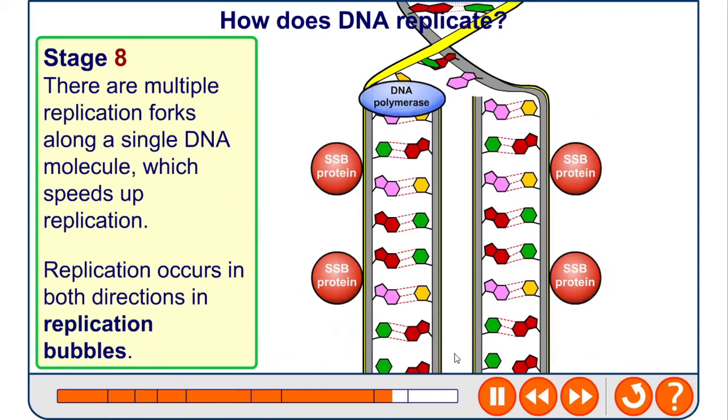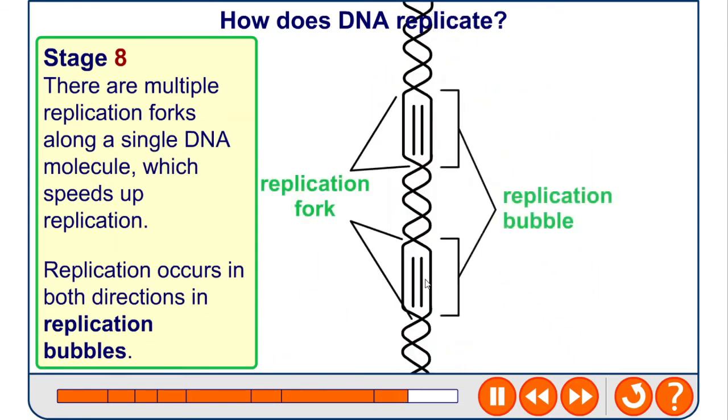There are multiple replication forks because if you did it in one massive continuous line from the start of a DNA molecule to the end, it would take an extremely long time. To optimize and speed it up, these replications occur in what's called replication bubbles.